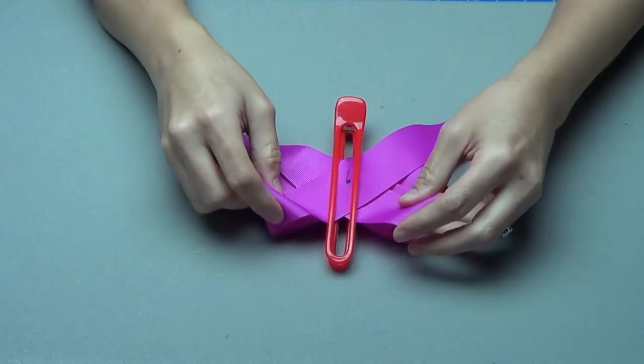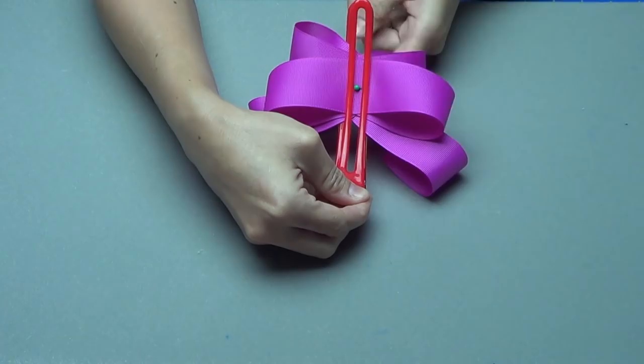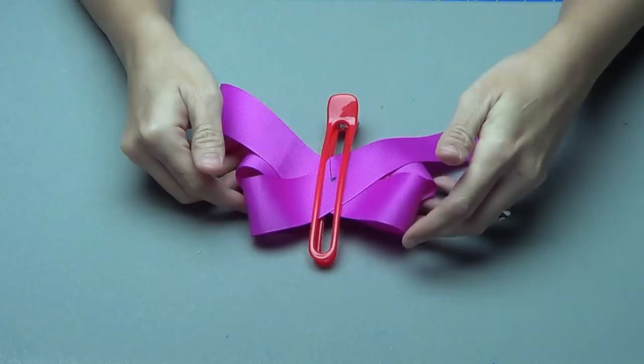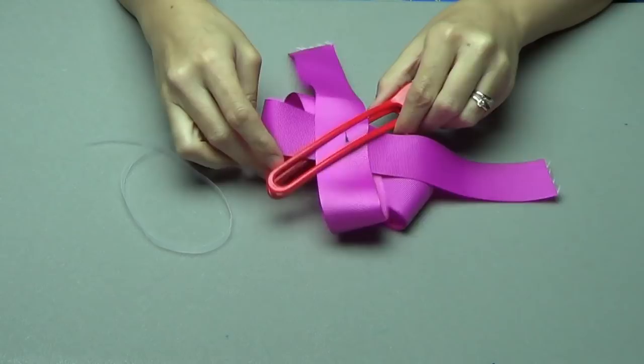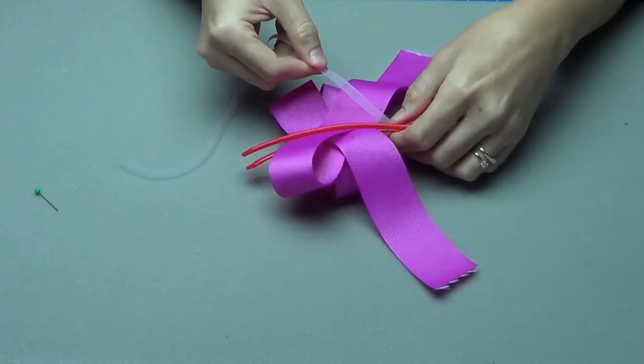Then what you're going to do is check your loops. Make sure that everything looks right and you don't have one way askew from the other. Flip it over and make sure that the back, that this straight piece is still straight. Straighten it out if you need to. Basically you're just checking your loops, making sure that everything looks the way you want it to. When you're happy with how it all looks you can take the pin out, but leave it in the salon clip.